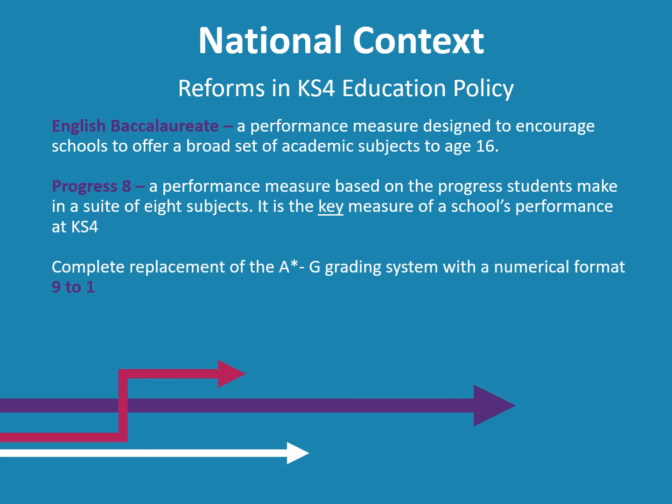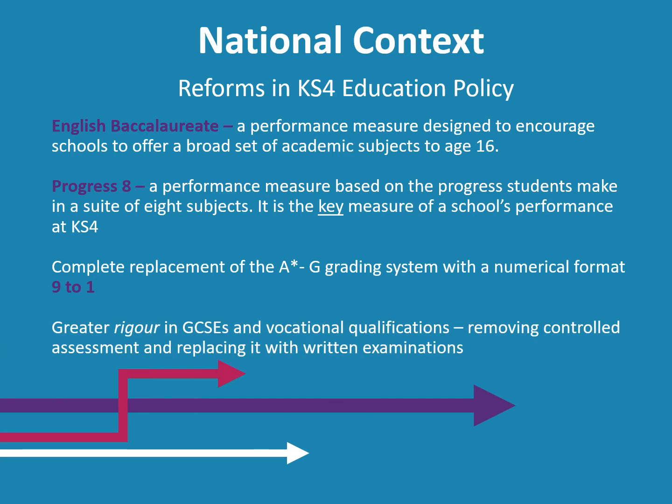The reforms also include the complete replacement of the A* to G GCSE grading system with a numerical format, 9 to 1. There is now greater rigour in GCSEs and vocational GCSE qualifications, achieved by removing controlled assessment and replacing it with written examinations. As such, it is very important that Year 9 students spend some time thinking carefully about subject choices in Year 10 and Year 11.